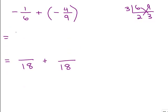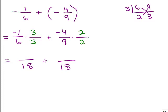I want to write negative 1/6 times something to get 18ths, and negative 4/9 times something to get 18ths. I need to multiply the denominator 6 by 3 to get 18, so I multiply the numerator also by 3. For the second fraction, I multiply 9 times 2, so the numerator gets multiplied by 2. This becomes negative 3/18 and negative 8/18.